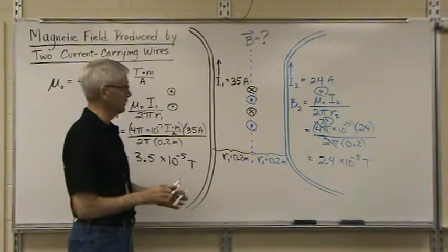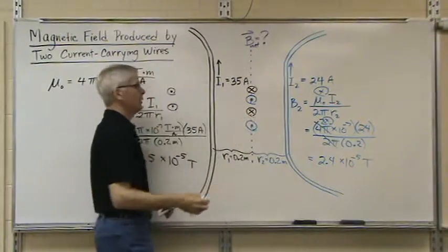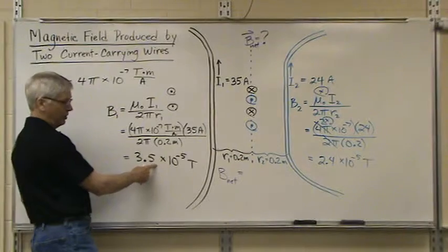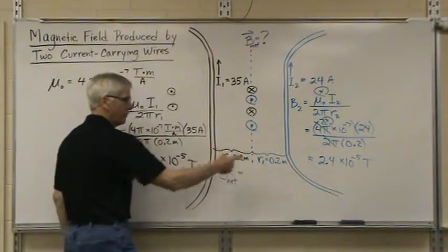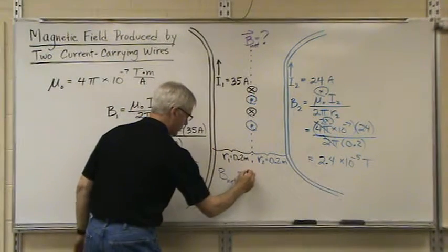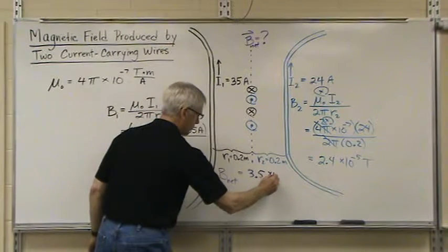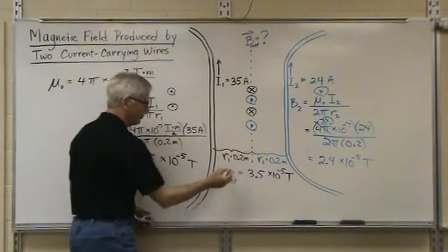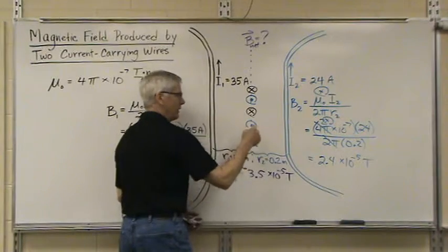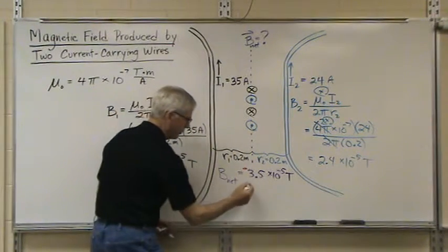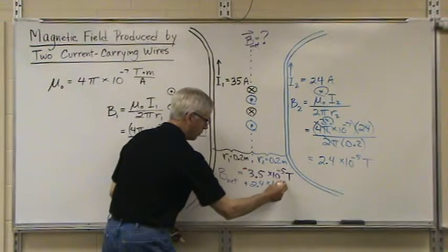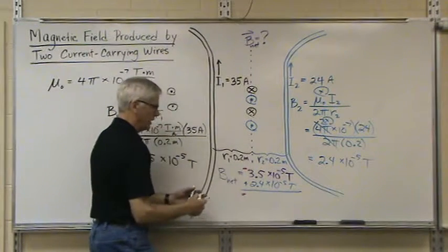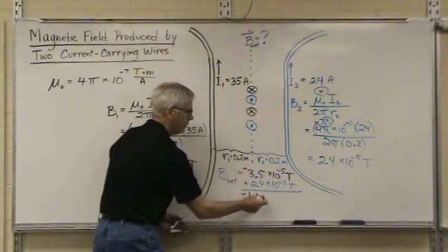To find the net force or the net magnetic field, we have to add them together. So B net equals this magnetic field into the board and this one out of the board. If we want to, we could say that into the board is negative, out is positive. So you've got a negative value for the first one. And because this one is coming out of the board, it's going to be a positive value.